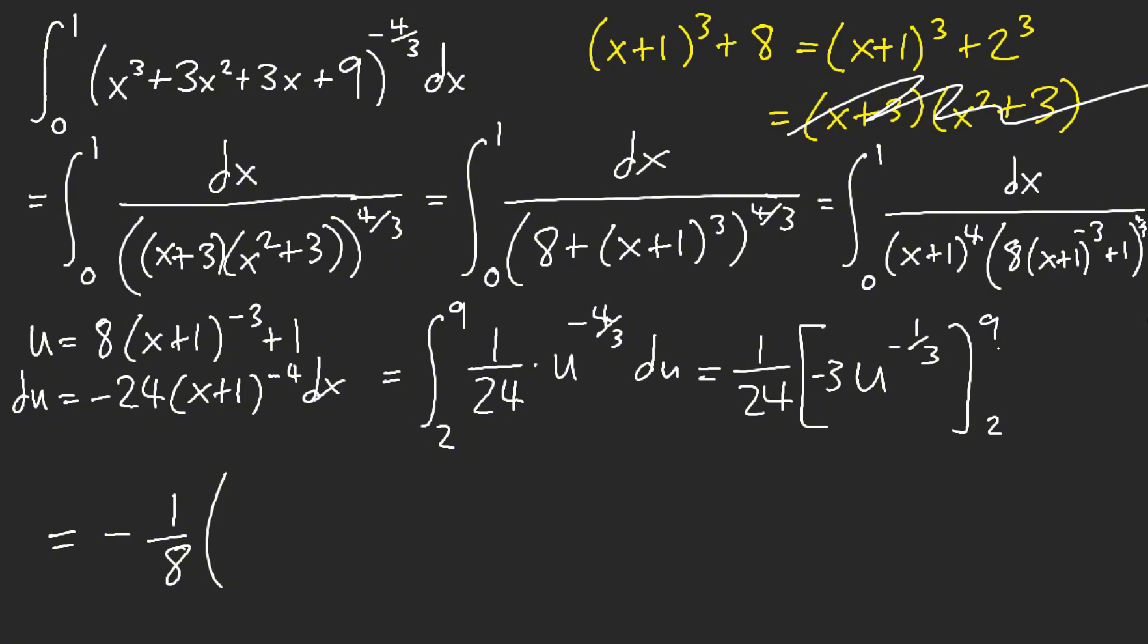You got -1/8 it seems, and then we have 1/∛9 - 1/∛2. So our answer is 1/8(1/∛2 - 1/∛9). I believe this is our answer.